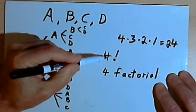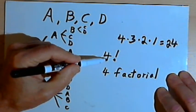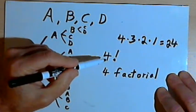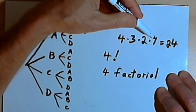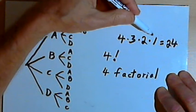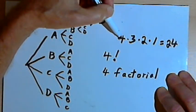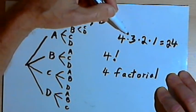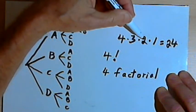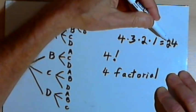You take the number before the exclamation point, in this case the four, and then you multiply it by each of the whole numbers that are less than that number. So I take the four and multiply it by three, then multiply that by two, then multiply that by one, and that's how I got my twenty-four.